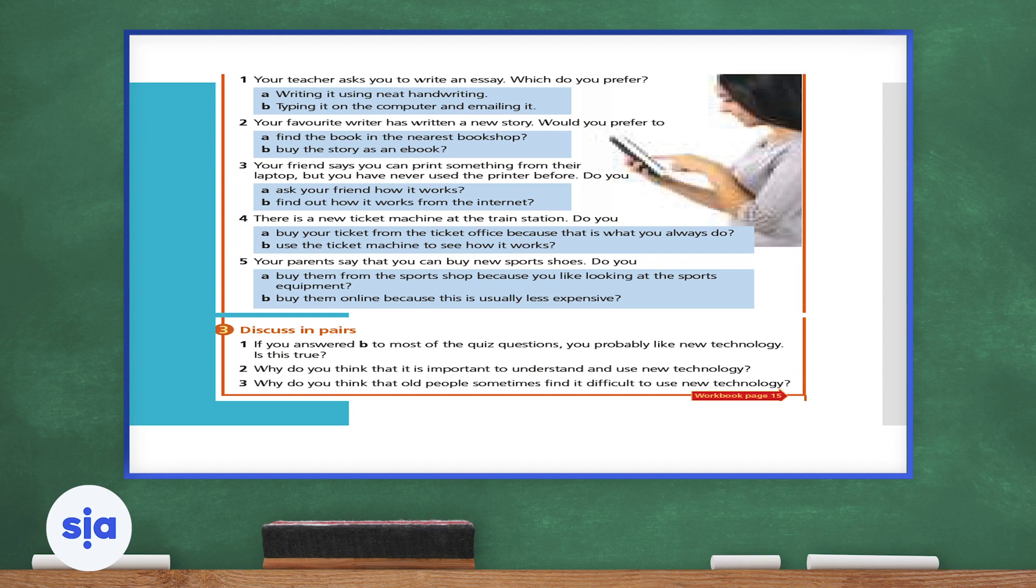Okay, now let's analyze our answers together. Let's try to understand what our answers mean. If you've answered B to most of the quiz questions, you probably like new technology. Is that true? Do you actually like new technology? Do you like shopping online? Let's look at question two. Why do you think that it is important to understand the new technology? Imagine a person who has never seen or used technology. Would his or her life be easier or more difficult in the 21st century?